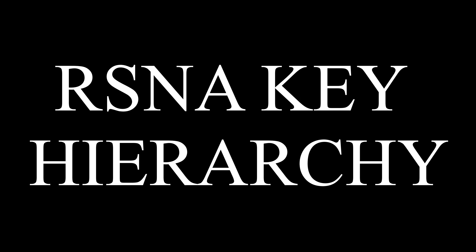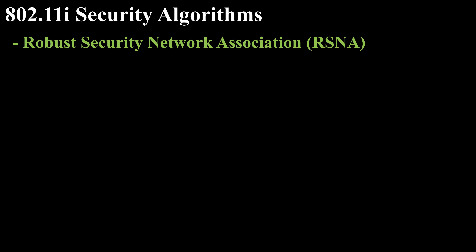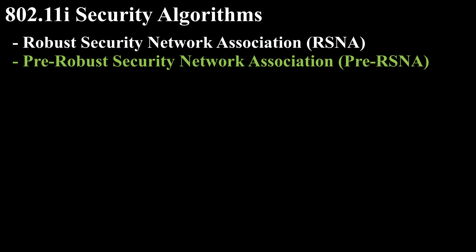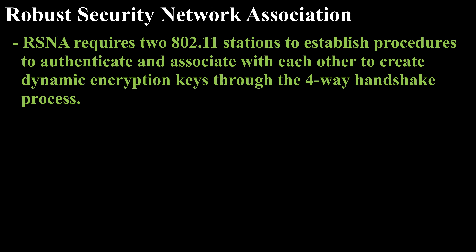Welcome. The topic for discussion is RSNA Key Hierarchy. The 802.11i specification divides security algorithms into two types: Robust Security Network Association (RSNA) and Pre-Robust Security Network Association. RSNA requires 802.11 stations to establish procedures to authenticate and associate with each other, creating dynamic encryption keys through the four-way handshake process.